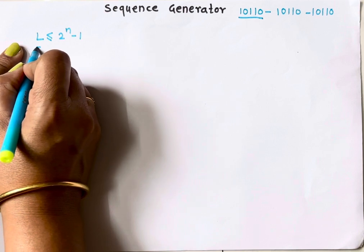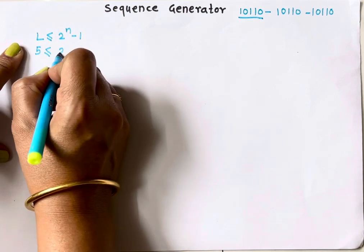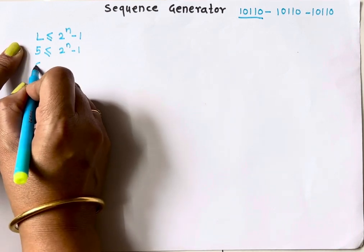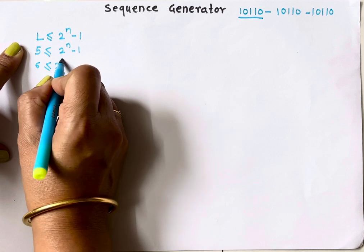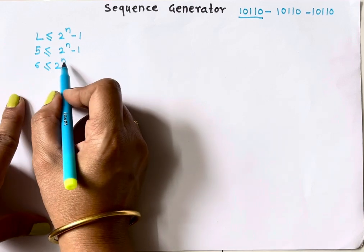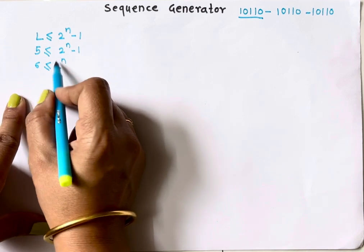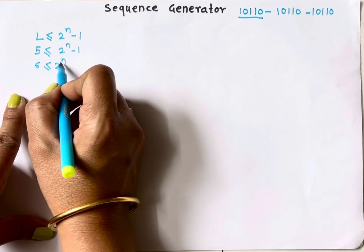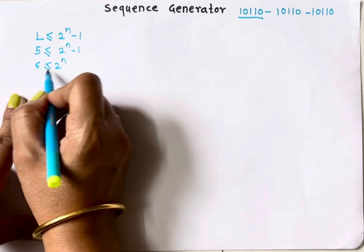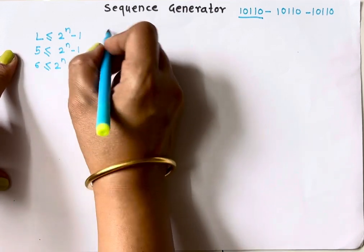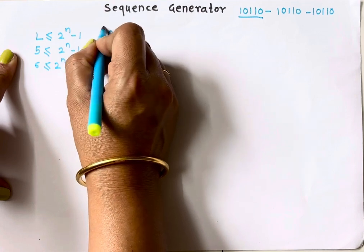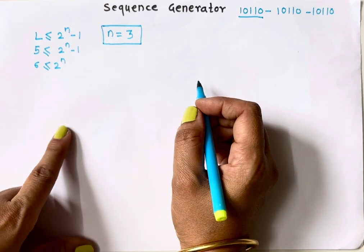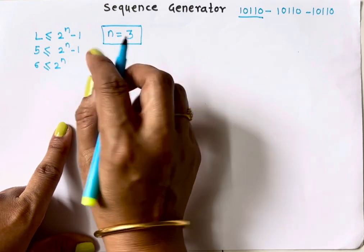Putting L as 5: 5 must be less than or equal to 2 raised to n minus 1. Moving the 1 to the other side gives 6 must be less than or equal to 2 raised to n. If n equals 2, the right-hand side is 4, which does not satisfy the condition. If n equals 3, it does satisfy the condition. So n equals 3 — the minimum number of flip-flops is 3, though we may need more.